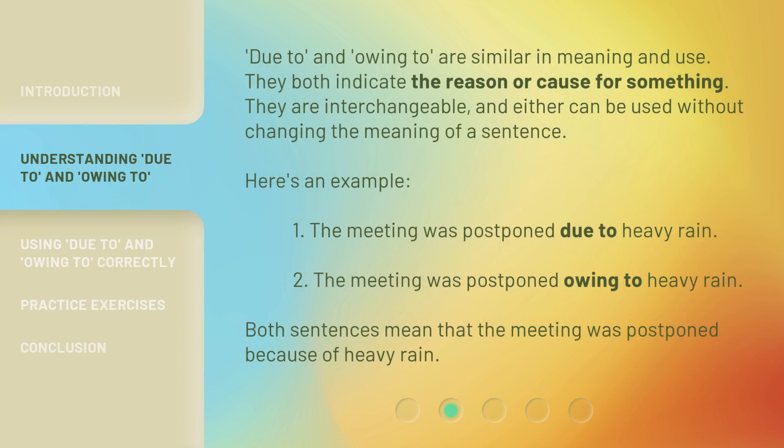Due To and Owing To are similar in meaning and use. They both indicate the reason or cause for something. They are interchangeable, and either can be used without changing the meaning of a sentence. Here's an example: 1. The meeting was postponed due to heavy rain. 2. The meeting was postponed owing to heavy rain. Both sentences mean that the meeting was postponed because of heavy rain.